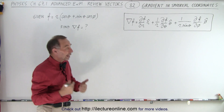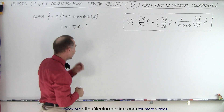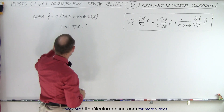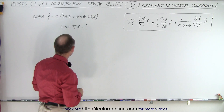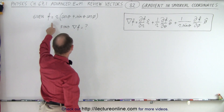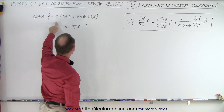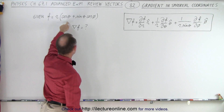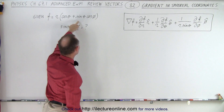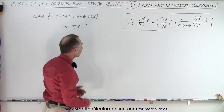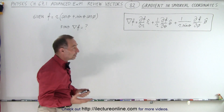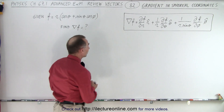So essentially, we're finding a vector in the direction of the largest change of that function — that's called the gradient of the function. Here we have an example where the function is defined as r times the cosine of theta plus sine theta cosine phi. So let's find the gradient of that.